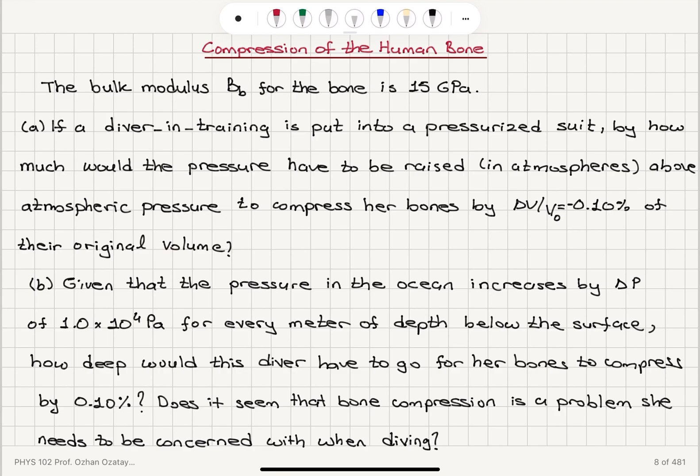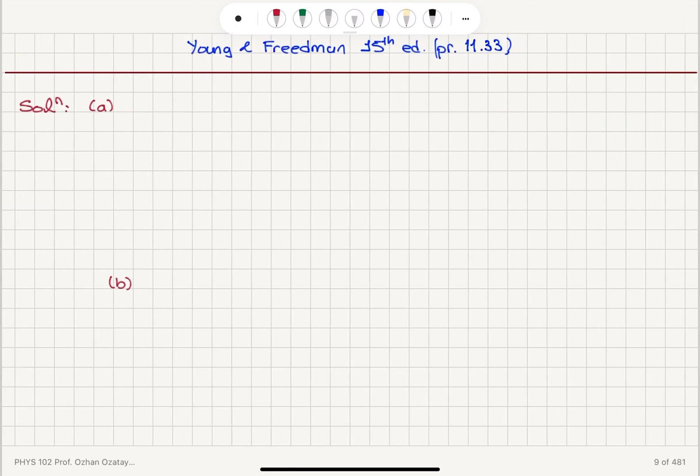So let's do this part A first. The change in pressure, delta P, that is responsible for the change in volume is minus the bulk modulus of the bone multiplied with delta V over the original volume.